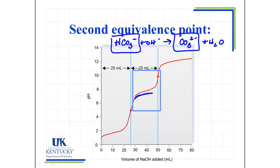We finally reach the point where we've just consumed all of the bicarbonate with the added hydroxide and there's only carbonate present. And when there's only carbonate present, this is definitely a base. So we see a pH in the base range.